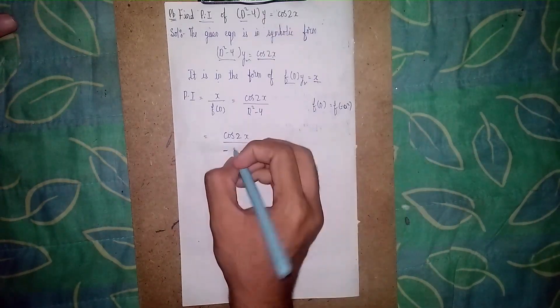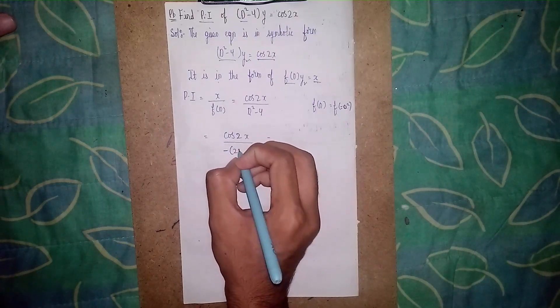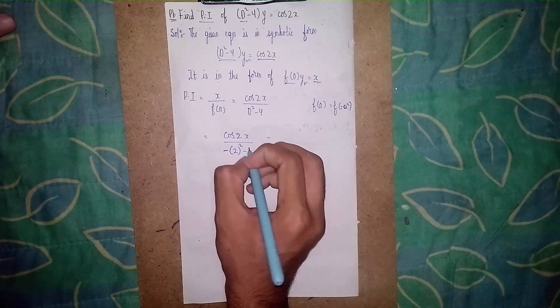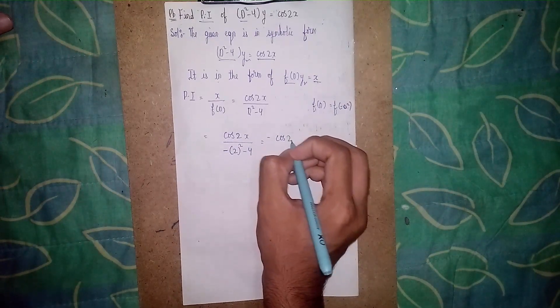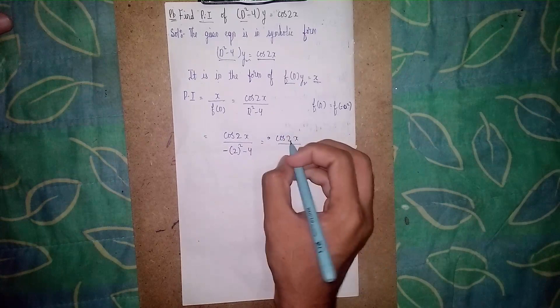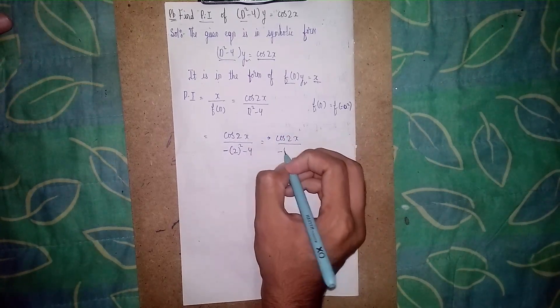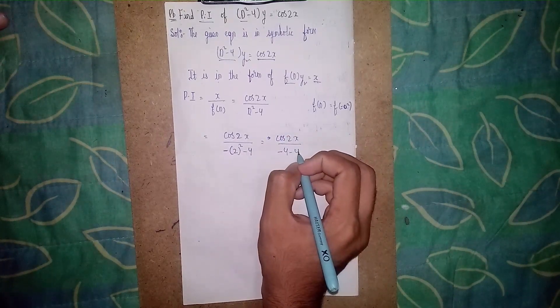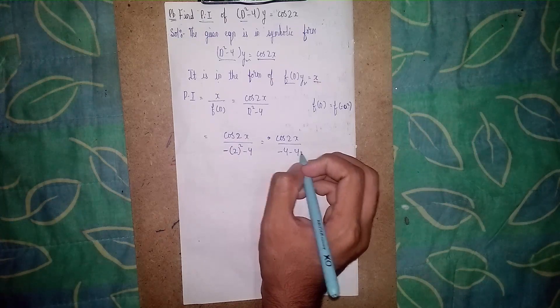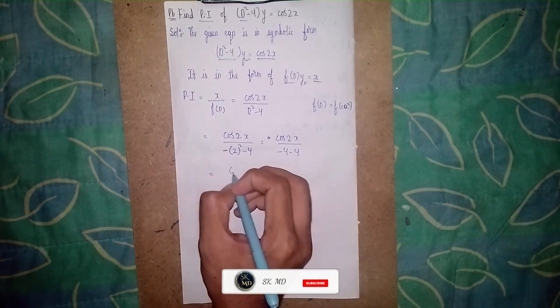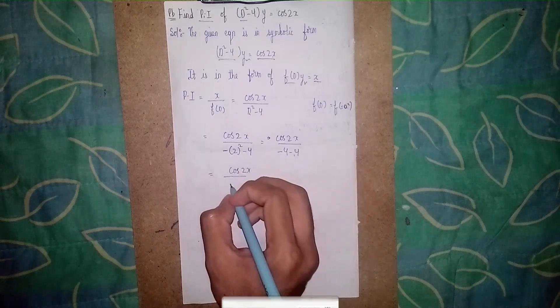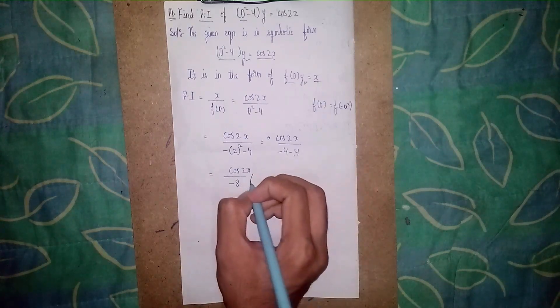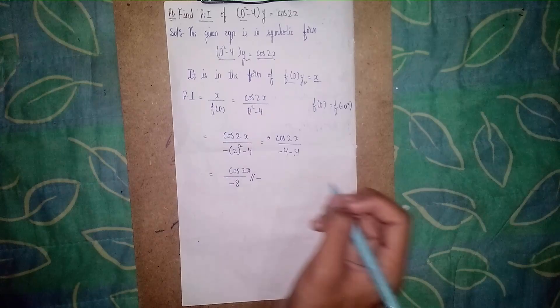Okay, so it becomes cos 2x by... not minus cos 2x by 4... so minus 4 into minus 4... don't let the denominator get 0. Okay, so cos 2x by minus into minus means plus, so it becomes minus 8. This is our answer, this is our particular integral. Thanks for watching.